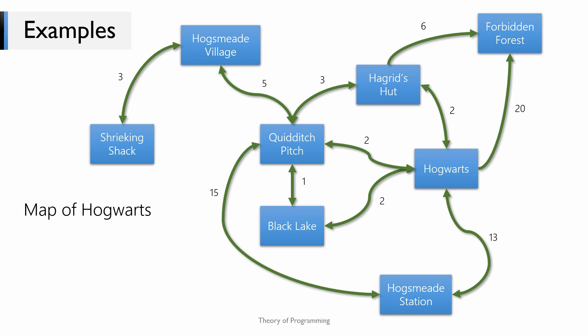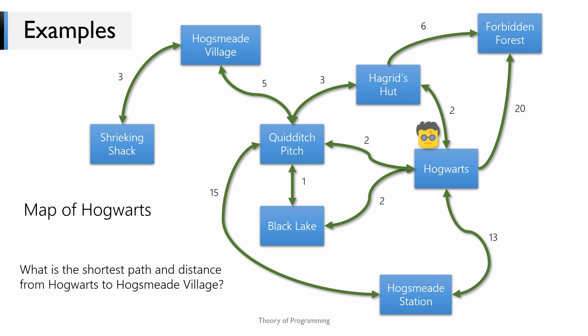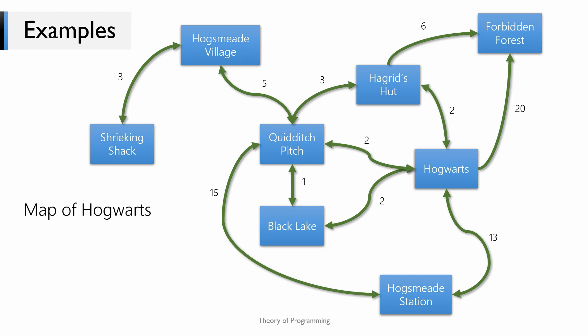Using the graph we can solve some interesting questions, like: what is the shortest path and distance from Hogwarts to Hogsmeade Village? By observing the graph you can see that the shortest path is via the Quidditch pitch and the total distance is 7. Pretty cool, right?